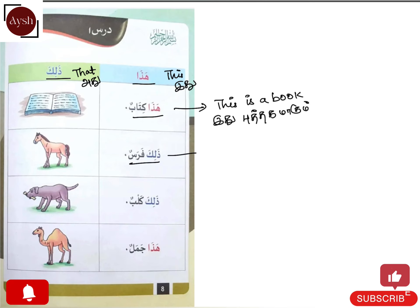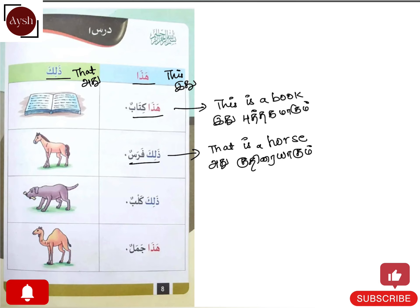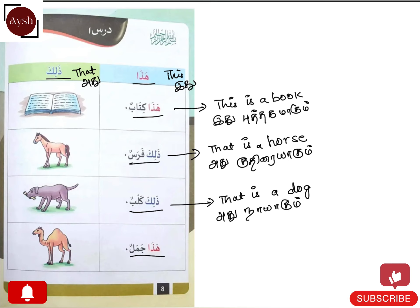Next: zalika farasun — that is a horse. Farasun means horse. In Tamil: adu kudirayagum. Next: zalika kalbun — that is a dog. Kalbun means dog. In Tamil: adu nayaagum. Haja jamalun — this is a camel. Jamalun means camel.